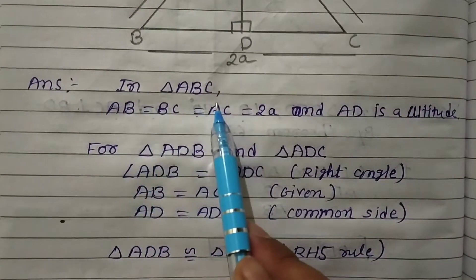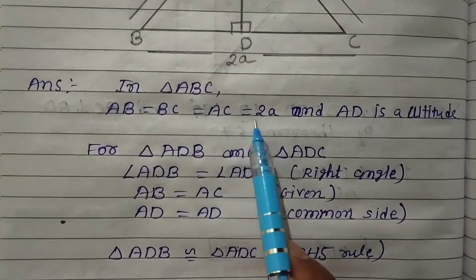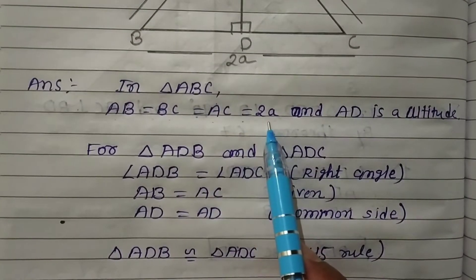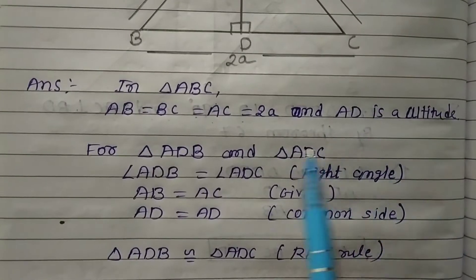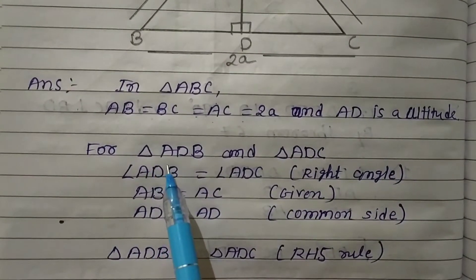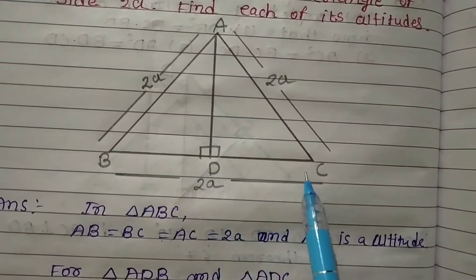In triangle ABC, AB = BC = AC = 2a because it is an equilateral triangle, and AD is an altitude. Now we take two triangles: triangle ADB and triangle ADC.